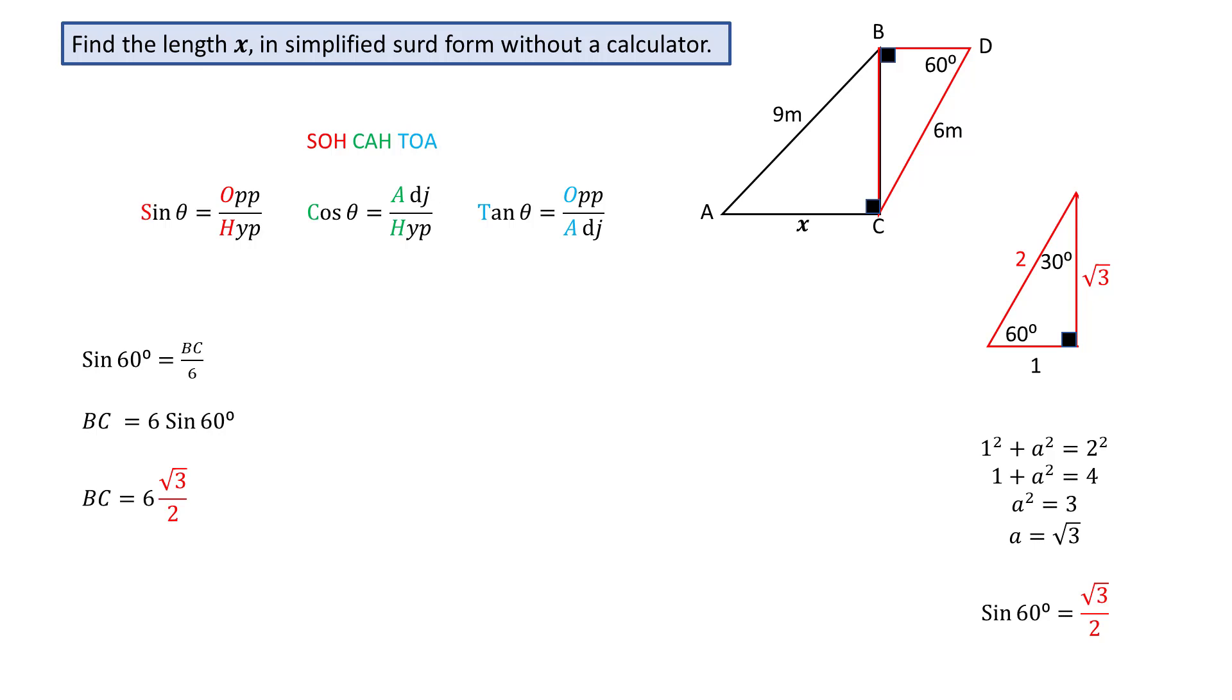Substitute into the equation for BC, giving BC equal to 6 times root 3 over 2, and simplify to give BC equal to 3 root 3. And writing the value of BC on the diagram.